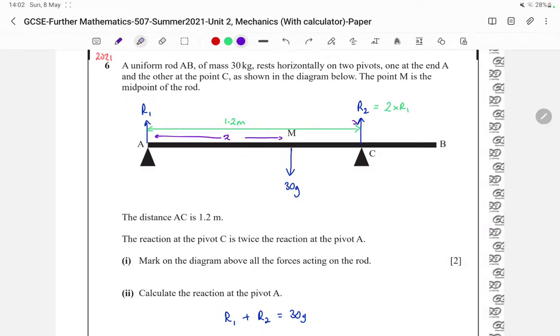Question 6 on the 2021 Mechanics past paper is a moments question. A uniform rod AB of mass 30kg rests horizontally on two pivots, one at the end A and the other at the point C, as shown in the diagram below. M is the midpoint of the rod.